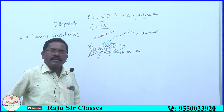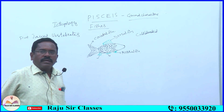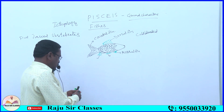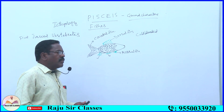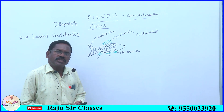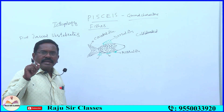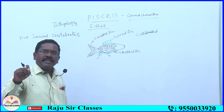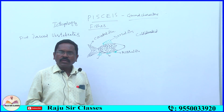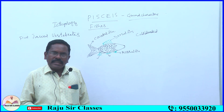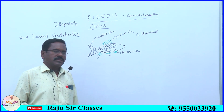Let us discuss the different metabolic reactions and how they take place in fishes. The digestive system: a common definition is that the alimentary canal and digestive glands together are called the digestive system.